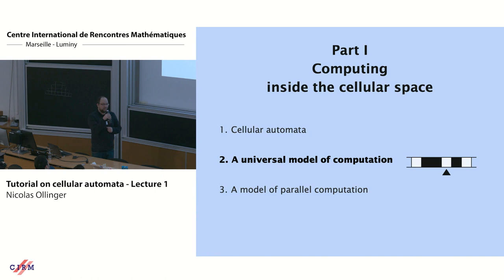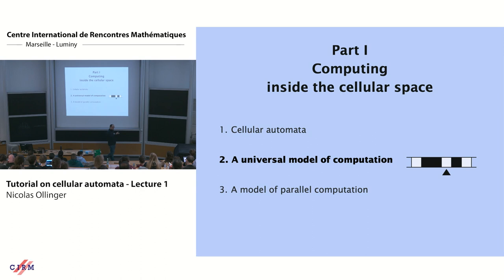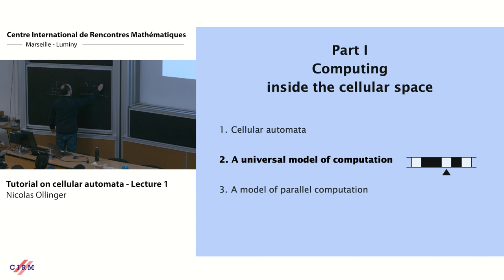So, ultimately periodic means it becomes periodic after a certain finite number of steps. In dimension one, it's simpler: you can have a left-periodic world and a right-periodic world that are different. In dimension two, it's more difficult because they would connect. So it's a finite pattern in a periodic configuration, or in dimension one, a periodic world on both sides — something like u^ω v.